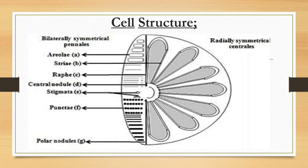You can see here in the diagram the components of diatom cells: polar nodules, cellulose, raphes, etc.